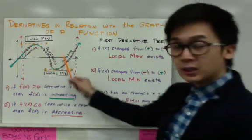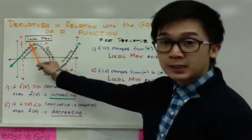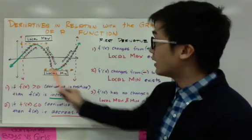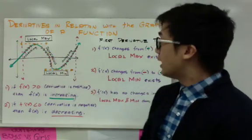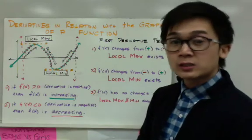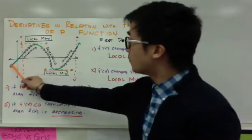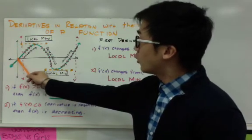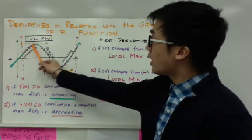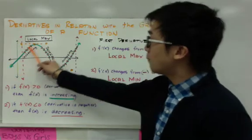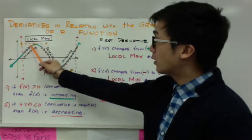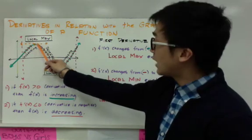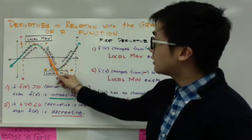In this graph, the local maximum is the peak of your graph, and the local minimum is the lowest point in your graph in a given interval. The function is increasing from negative infinity up until the local maximum. From your local maximum, or your highest peak, it starts to change direction and is now decreasing.